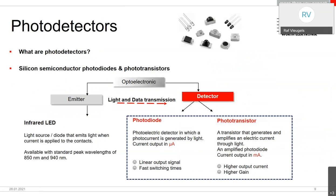Since infrared light is invisible to the human eye, you need photodetectors to detect it. Photodetectors are silicon semiconductors driven in reverse current, and there are two main types: photodiodes and phototransistors. Photodiodes generate a very small microamp-level current from light, with a linear output signal and very short response time, enabling very high switching frequencies. Phototransistors generate and amplify the electrical current from light, producing milliamp-level currents with higher gain, making them useful where more signal is needed.